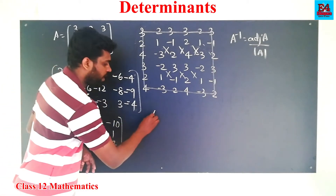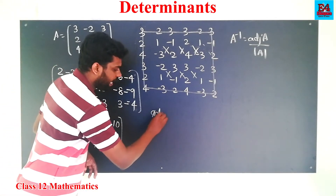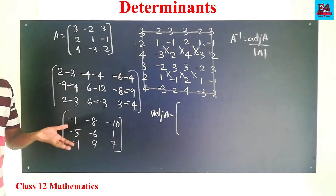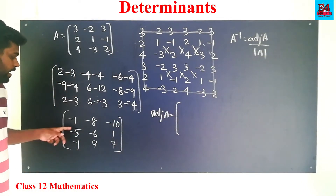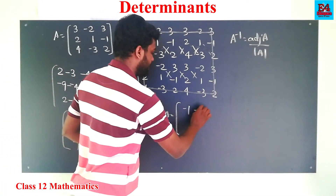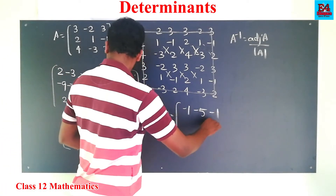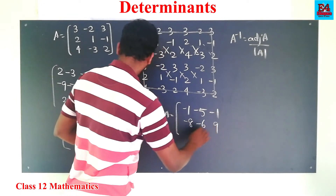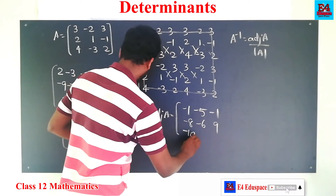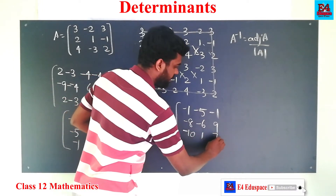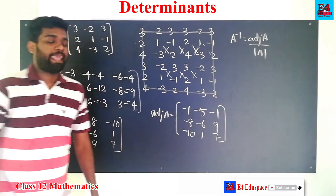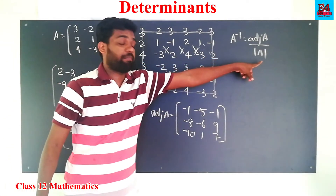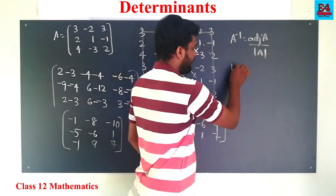The adjoint A is equal to — after taking the transpose — the rows become: minus 1, minus 5, minus 1; then minus 8, minus 6, 9; then minus 10, 1, 7. This is the adjoint A.